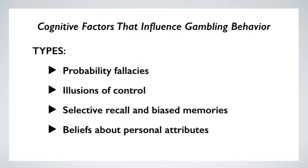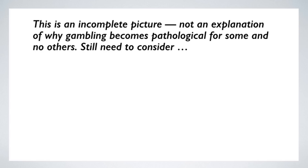That's our list of some of the cognitive factors that can influence gambling behavior. But I don't want people to think that this list by itself gives us an explanation for problem gambling. Gambling is a complex phenomenon, and what we've been talking about is only part of the picture. We've been focusing on the cognitive component, but we know it can't be the whole story because everyone is prone to these cognitive biases — to some extent they're universal. So they can't by themselves explain why gambling becomes pathological for some but not for others, or what distinguishes the casual gambler from the pathological gambler.